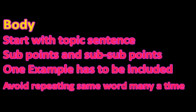In the body, start with a topic sentence based on the points given in the introduction. The topic sentence tells what you are going to write in that paragraph. Then explain with sub-points and sub-sub-points. For example, if the topic is pollution, in the introduction you tell there are different types of pollution and the most important ones are man-made and nature-made. In the body, start with 'Man is the main polluter of the air' as a topic sentence, then find sub-points like factories, vehicles, houses, and cooking, and explain each with further detail.